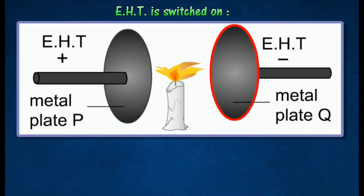Note that a bigger portion of the flame is attracted towards the negative plate as the mass of the positive ions is larger than that of the negative ions.